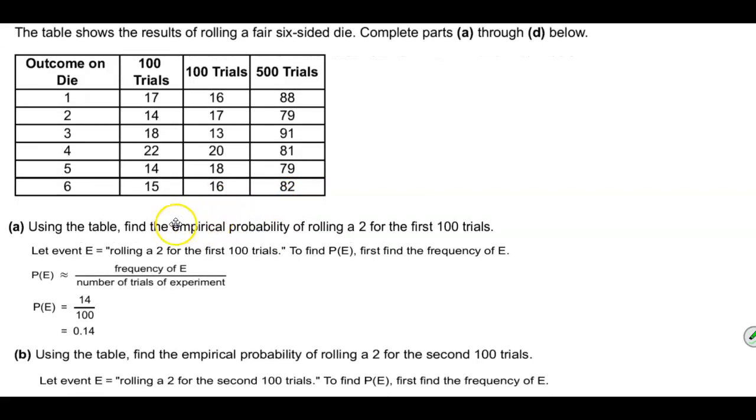We're going to use the table to find the empirical probability of rolling a two for the first 100 trials. So the event is rolling a two for the first 100 trials. If you take a look at that column here, we can see that rolling a two for the first 100 trials is 14. Therefore the frequency represents 14, and we're dividing it by the total number of trials, which is 100, and therefore 14 divided by 100 is 0.14.